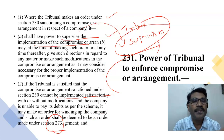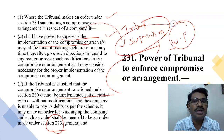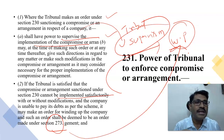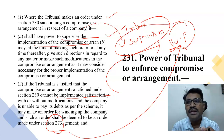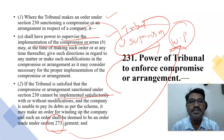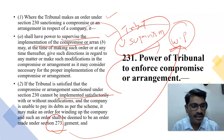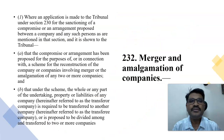If the tribunal is satisfied that the compromise or arrangement under Section 230 cannot be implemented satisfactorily — with or without modification — and the company is unable to pay its debts as per the scheme, it can make an order for winding up of the company. This is a very important clause: even at the time of a scheme of amalgamation, the tribunal has the power to wind up the company.